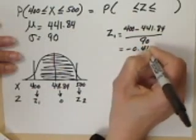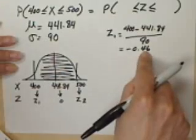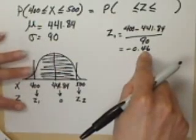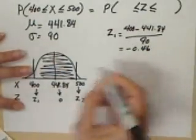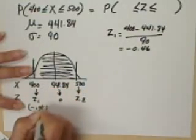The reason why I use two decimals is because the normal distribution table reports Z values to two decimals. So we know Z1 is negative 0.46.